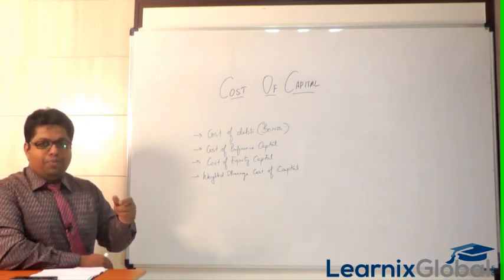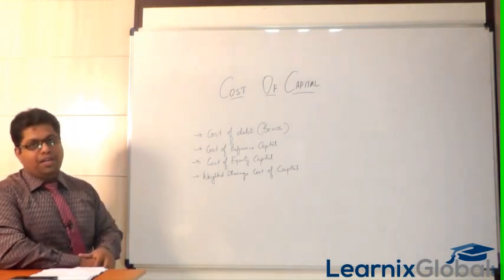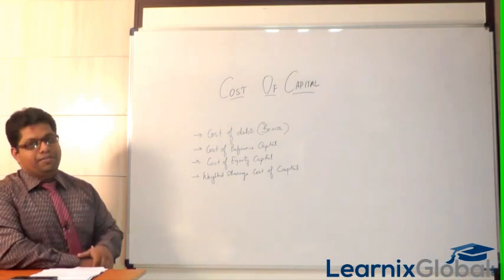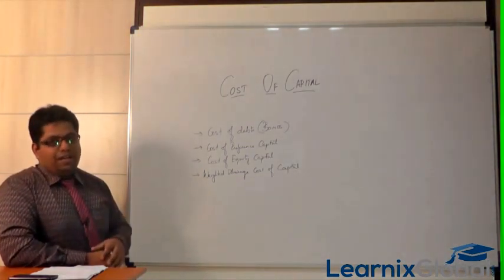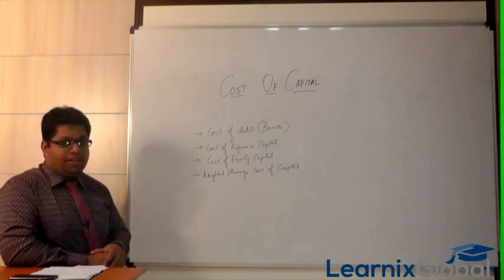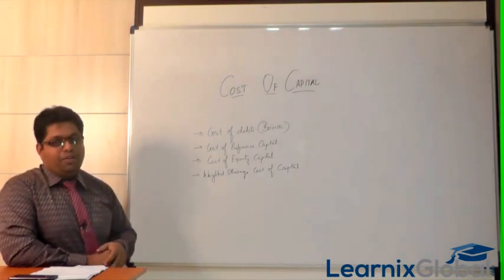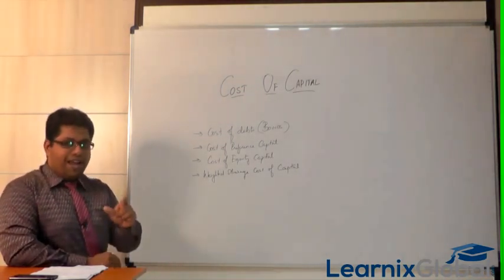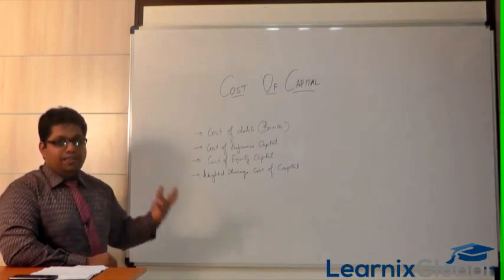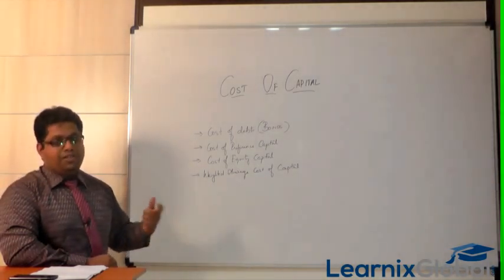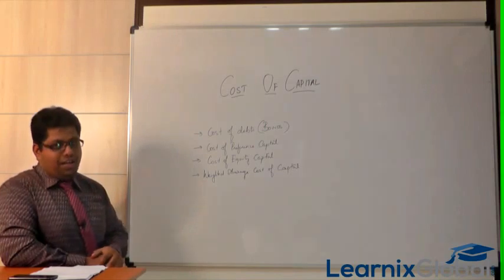You cannot assume the coupon rate is the cost of the bond. If sold at premium, the cost of the bond is less than the coupon rate. If at par, it equals the coupon rate. If sold at discount, the cost is always more than the coupon rate. The cost can be adjusted by variables like tax, issue price at premium, or issue price at discount.